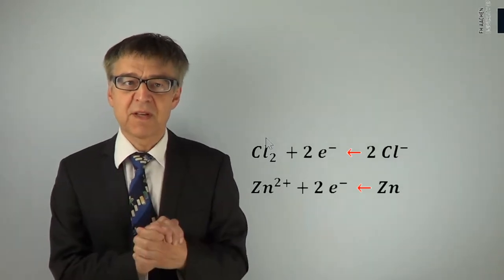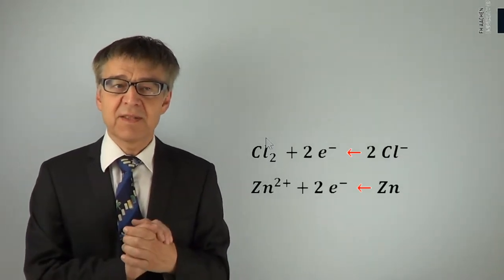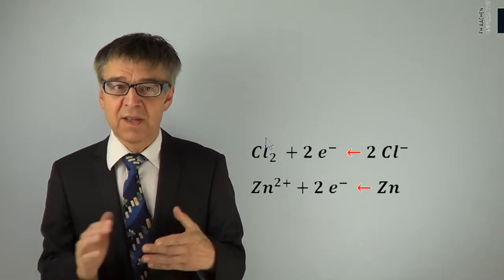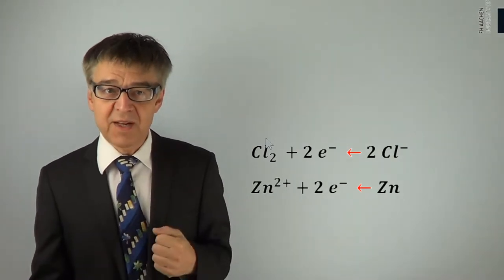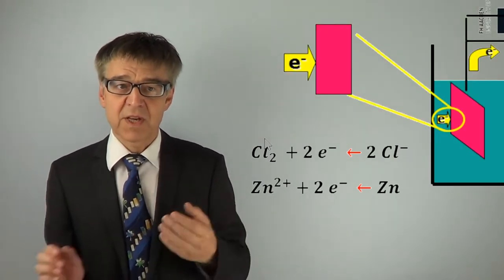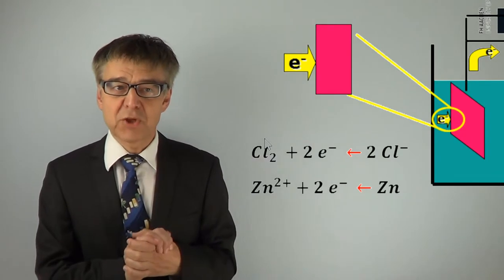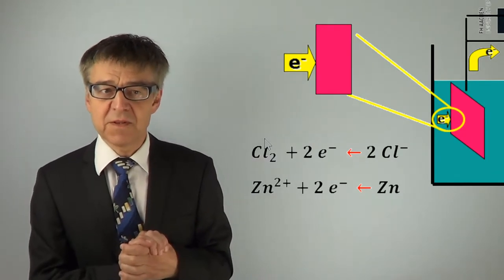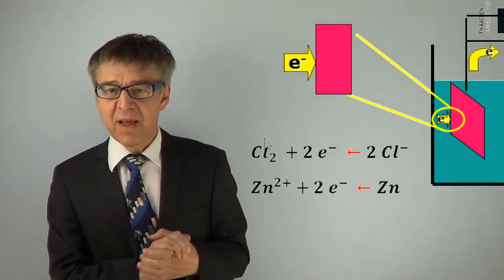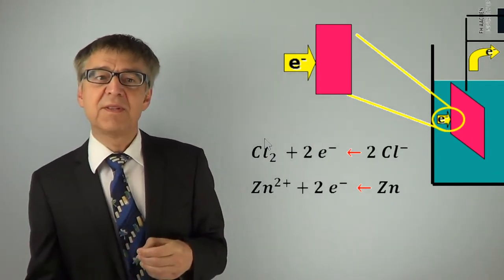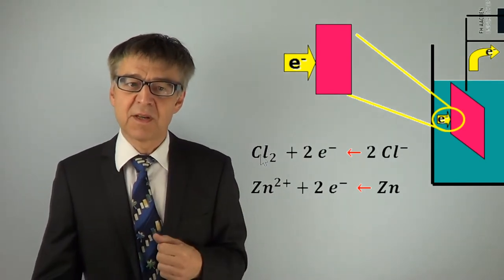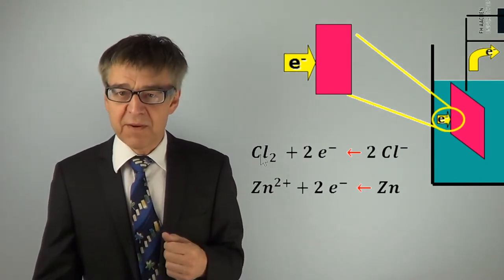Both processes take place at the anode. In an electrolytic cell, the anode is the positive terminal – in this case, oxidation is enforced. For a galvanic cell, the anode is the negative terminal. Oxidation proceeds voluntarily.